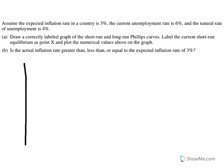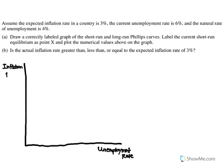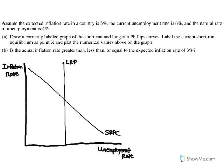Here are our axes. I'm going to switch to a lighter brush here. We've got inflation rate on the vertical axis — writing those labels out is very important. Then we've got our short run Phillips curve, downward sloping, and our long run Phillips curve, which is a vertical line.